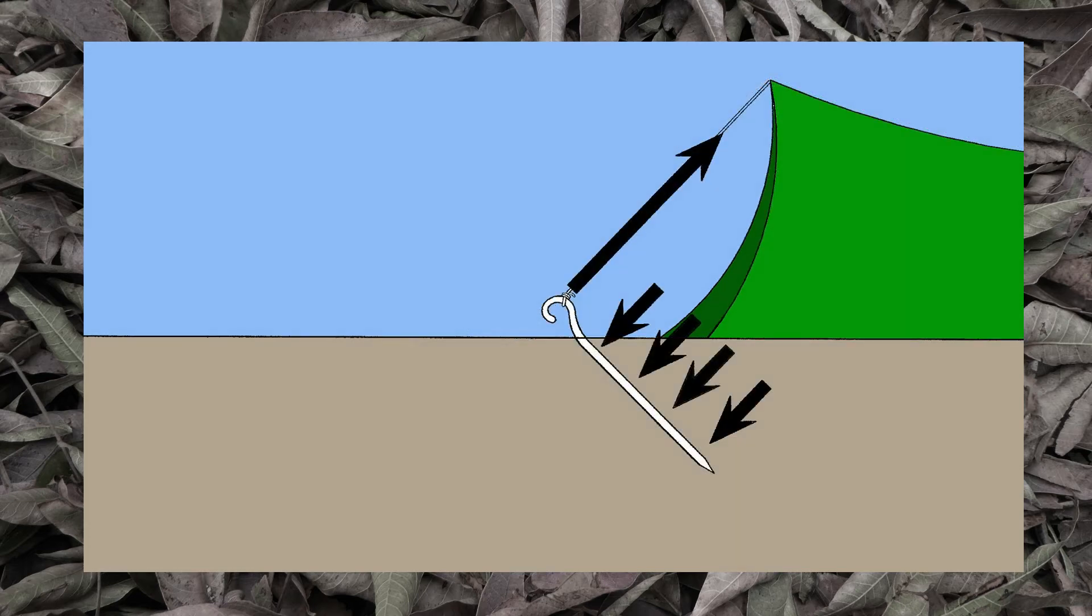If you want dirt to push in the opposite direction from the guy line pull, there has to be enough dirt to provide the pushback.